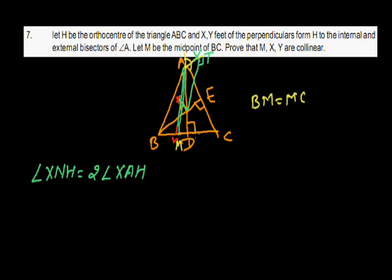Let AV be the internal angle bisector of angle A, and the perpendicular from H to this bisector is HX. Let O be the circumcenter of triangle ABC.